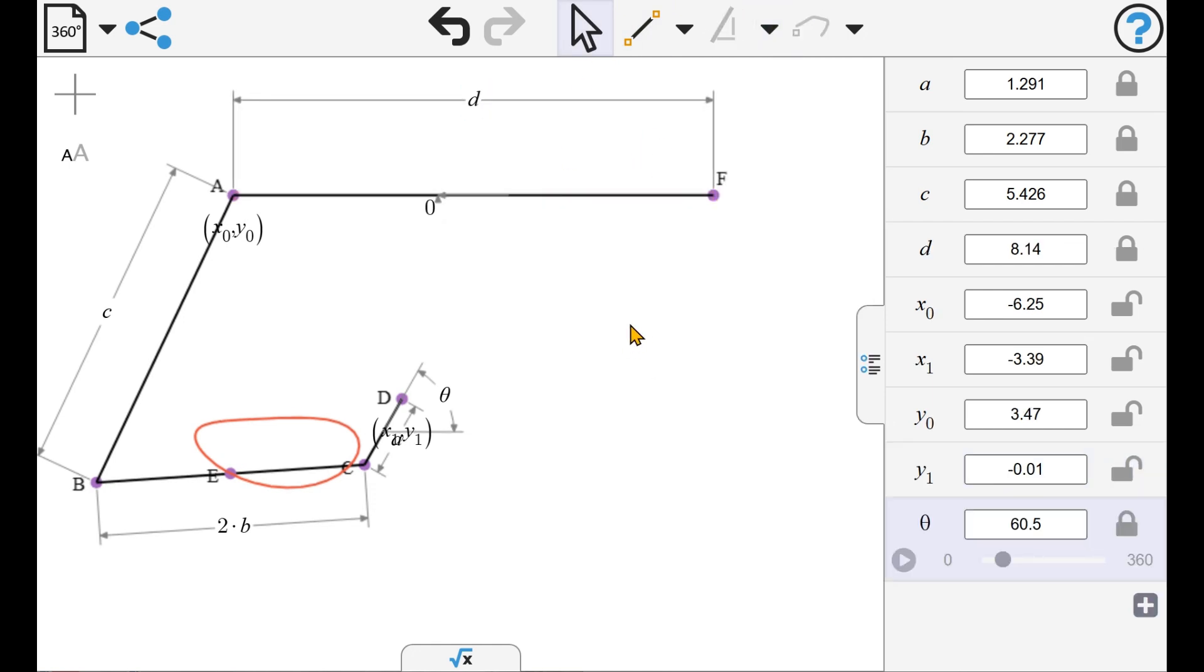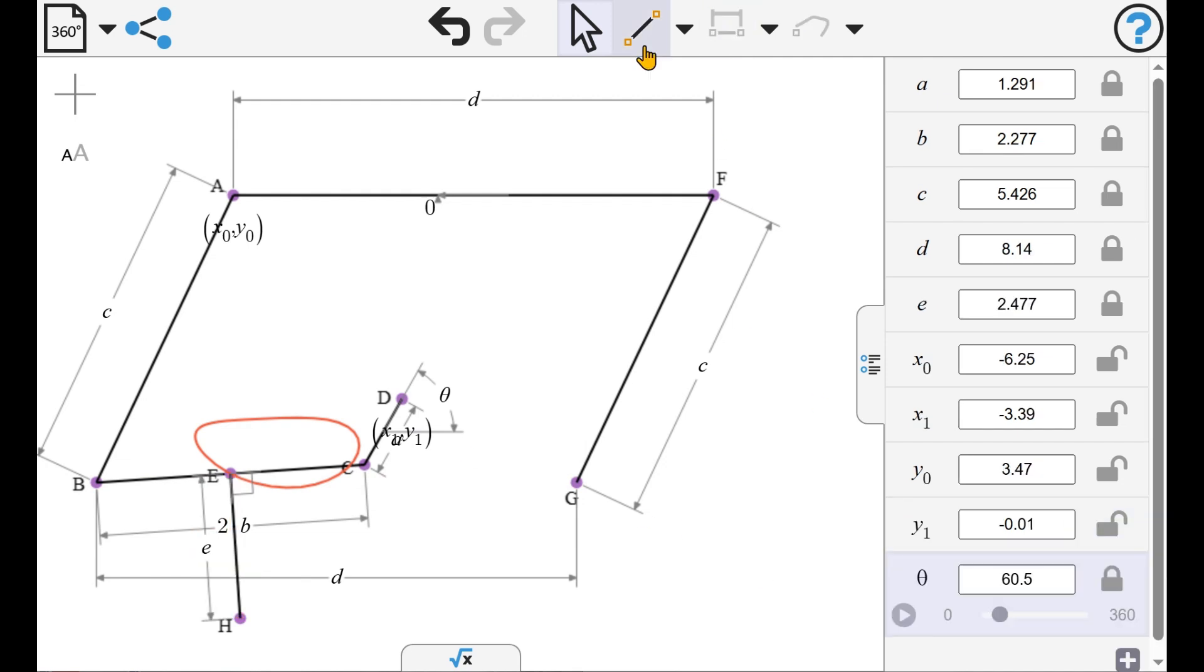And so here is the four-bar linkage that is going to drive our mechanism. We now need to add some other parts of linkage, some parallel links, in order to create a second point which follows the same curve, or rather the same curve transposed.